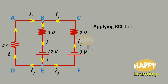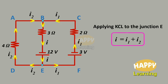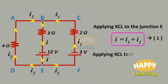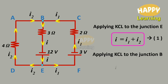Applying KCL to junction E: I is equal to I1 plus I2. The sum of currents entering the junction is equal to the sum of currents leaving the junction. Let it be equation number 1. Similarly, applying KCL to junction B will give the same equation: I1 plus I2 equals I.